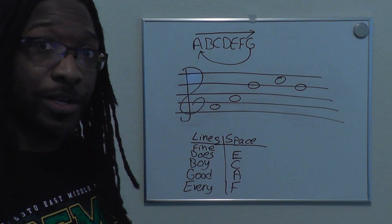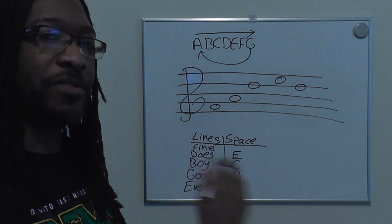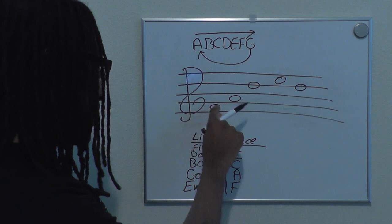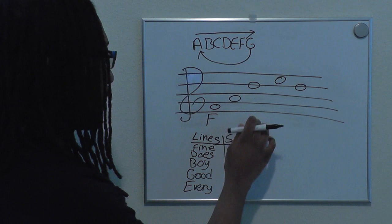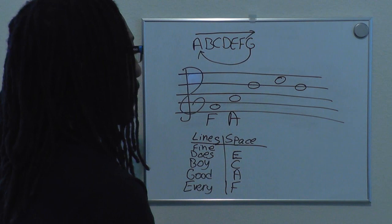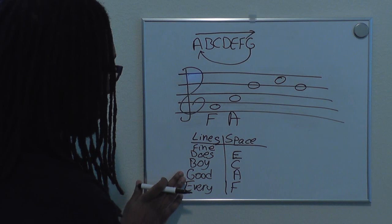I want to figure out what this word is. We're going to take it note for note, going left to right. This first note is on space number one — space number one is F. The second one is on space number two — space number two is A. This third one is on line number four — one, two, three, four — so that would be the letter D.